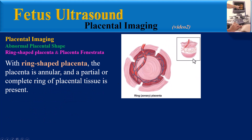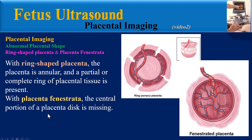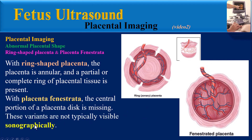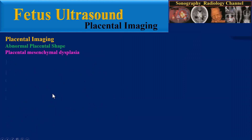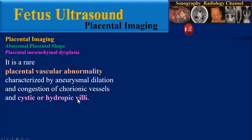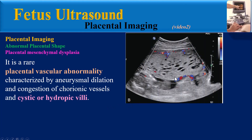With ring-shaped placenta, the placenta is annular and a partial or complete ring of placental tissue is present. With placenta fenestrata, the central portion of the placental disc is missing. These rare variants are not typically visible sonographically.